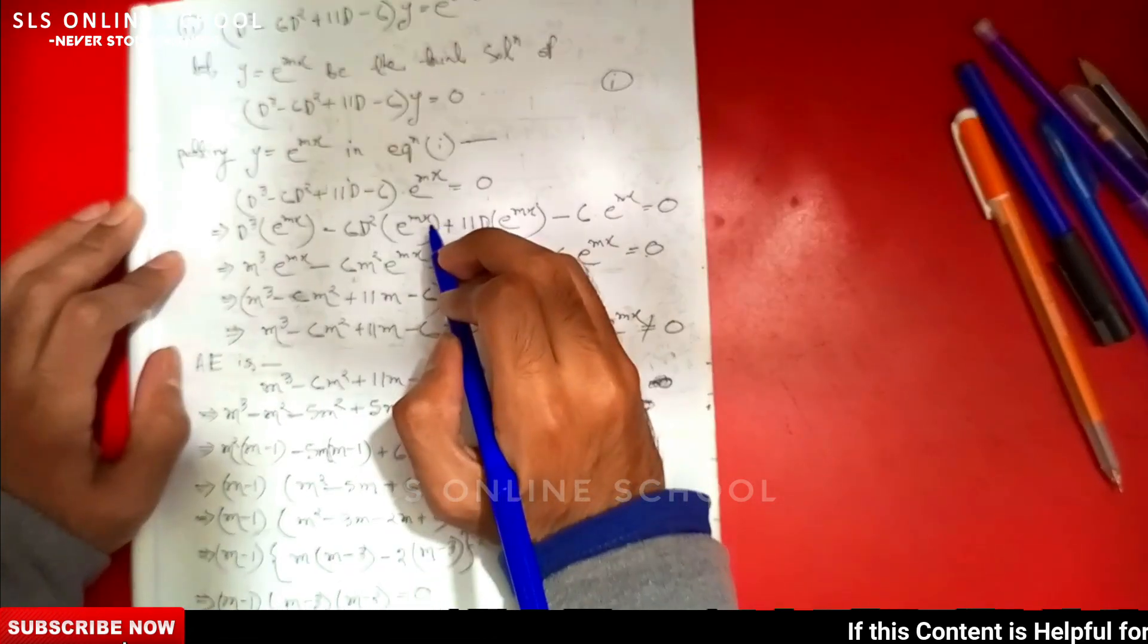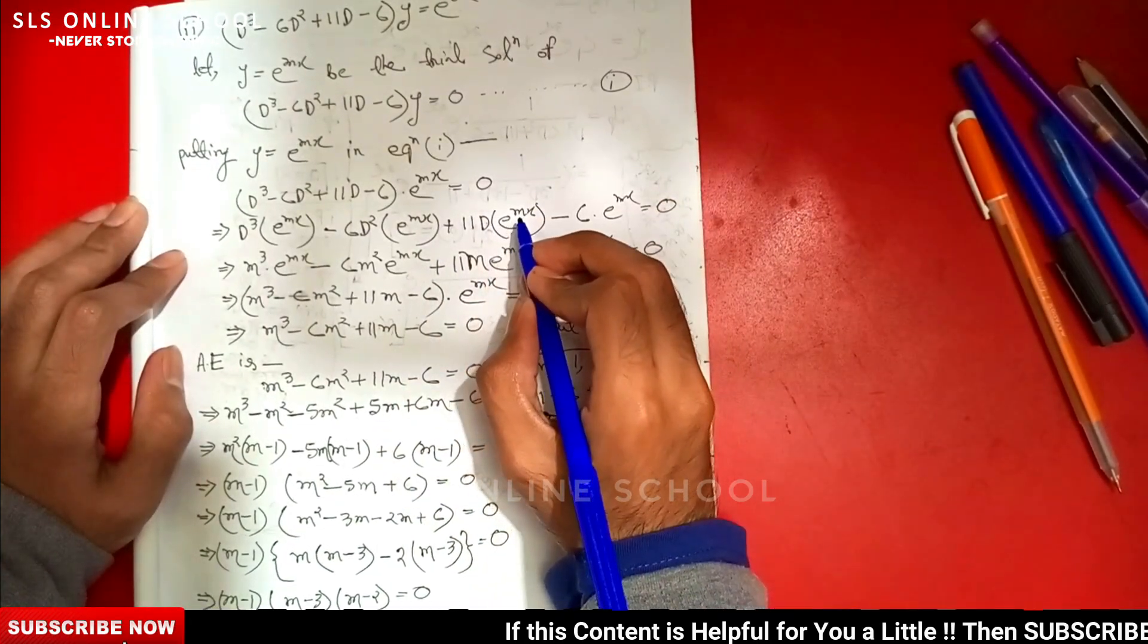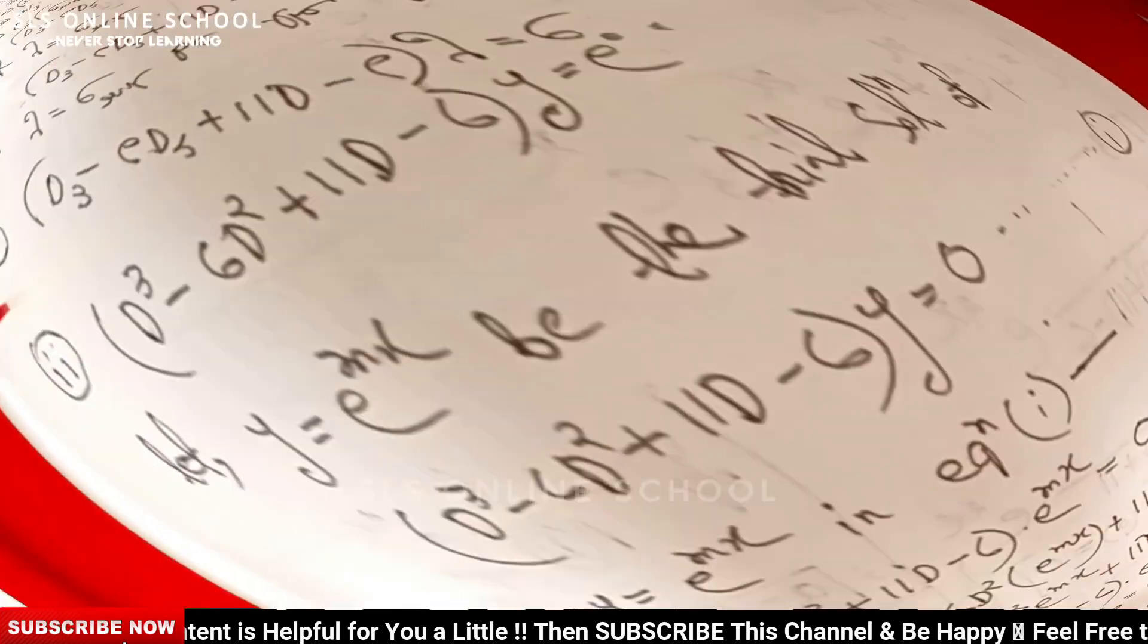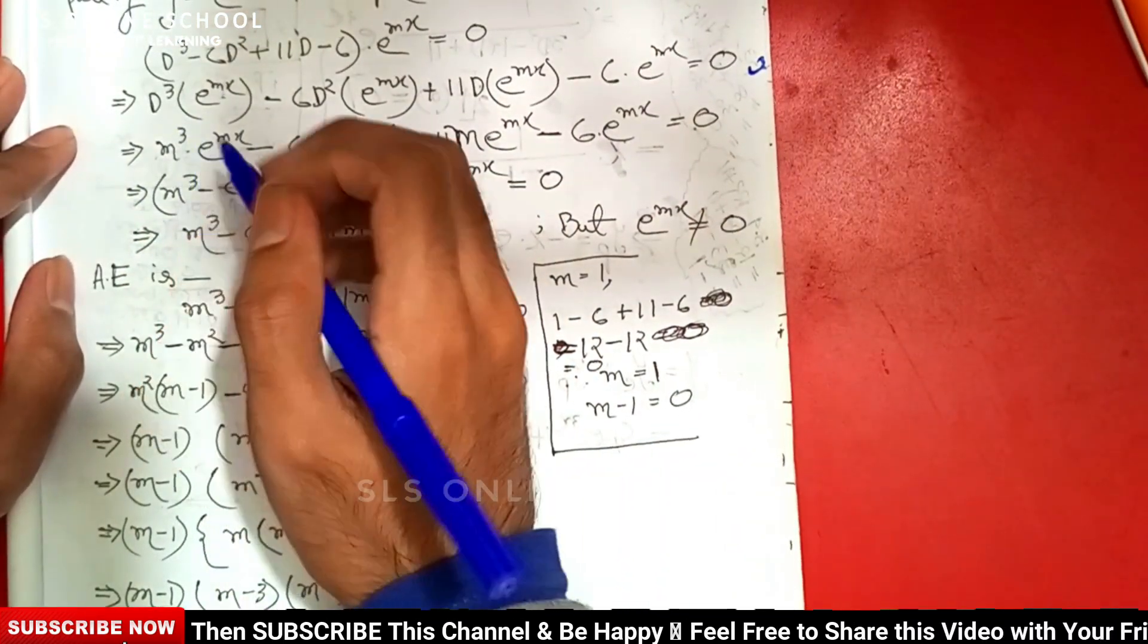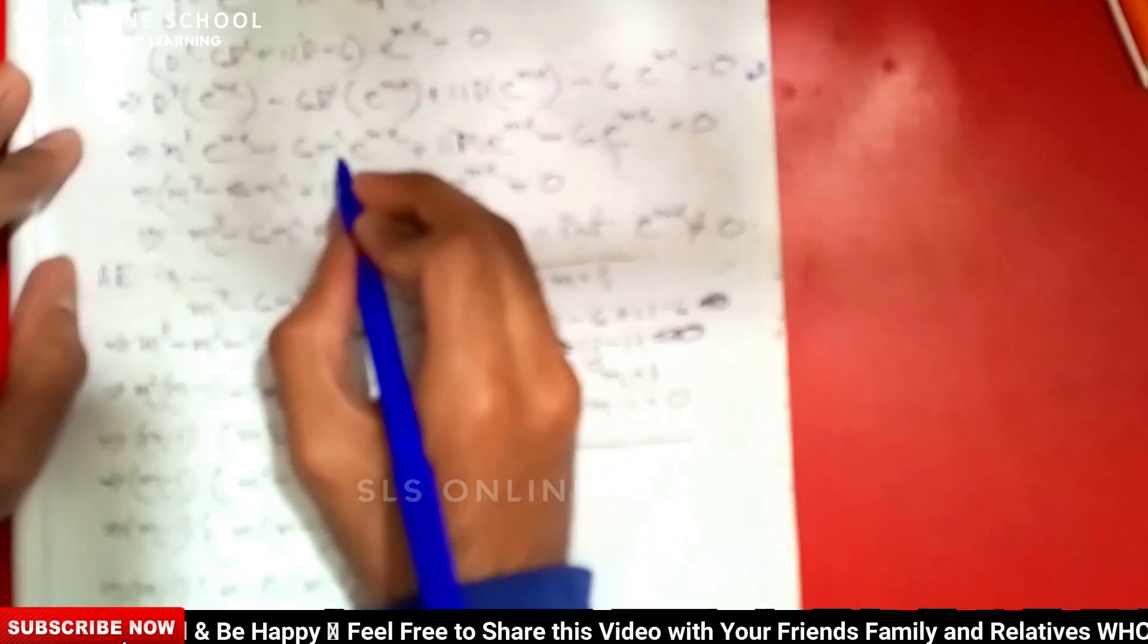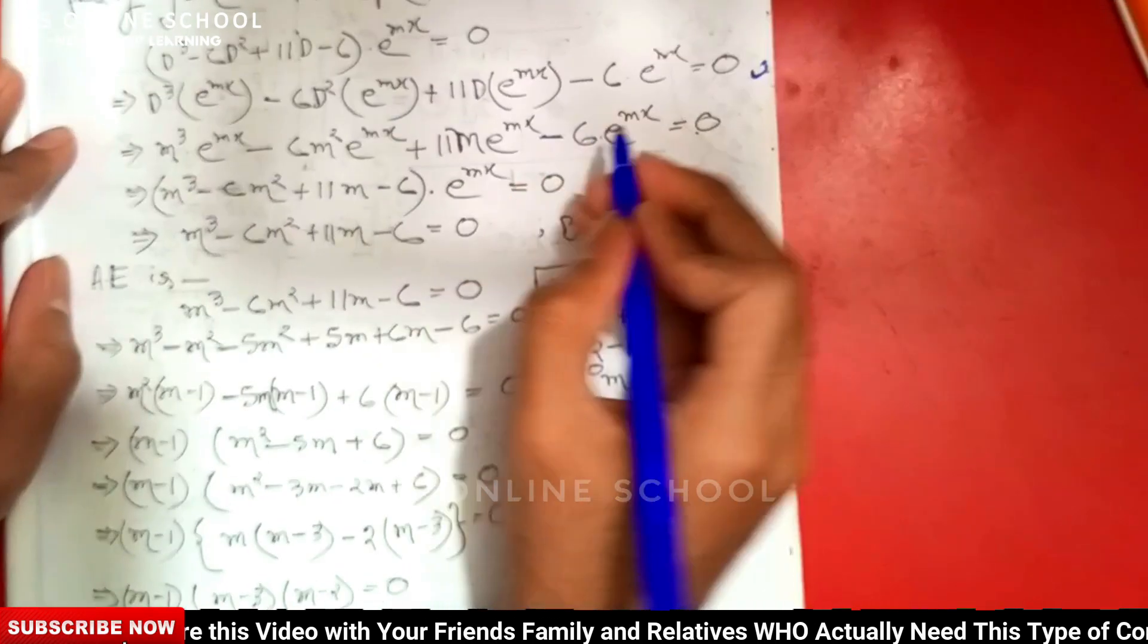This becomes m³e^(mx) - 6m²e^(mx) + 11me^(mx) - 6e^(mx) = 0. Then as usual, the different derivatives give us m³ into e^(mx) minus 6m² e^(mx) plus 11m into e^(mx).